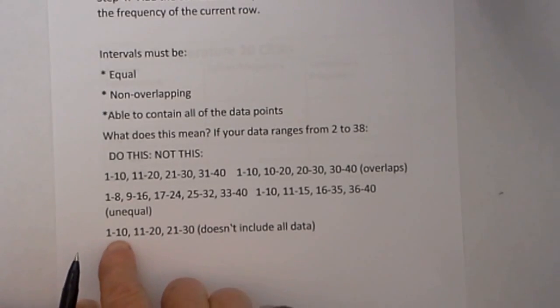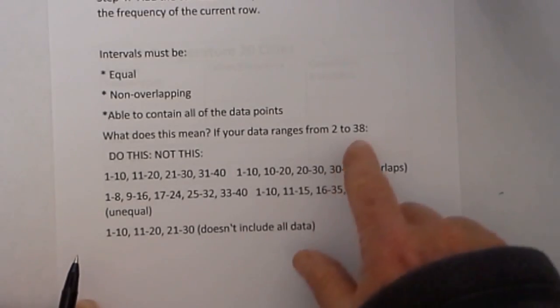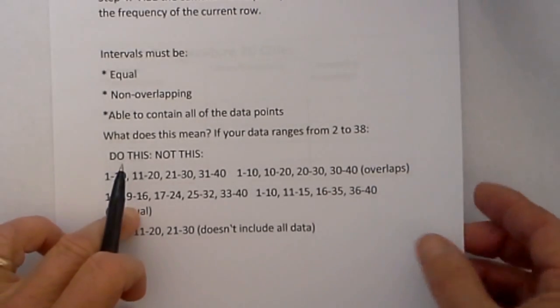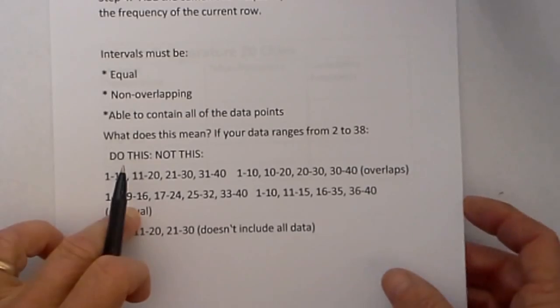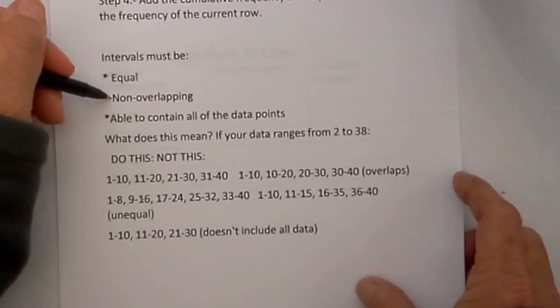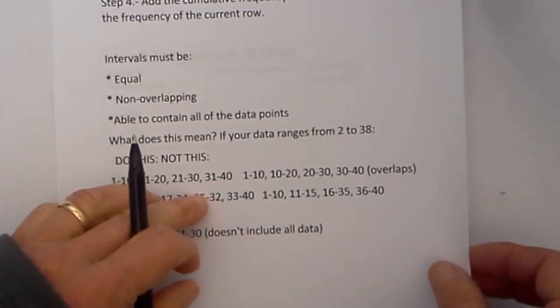Finally, this looks good. 1 to 10. No overlap. But notice it stops at 30 and our data goes up to 38. So be careful with your intervals. They must be equal, non-overlapping, and contain all of your data points.